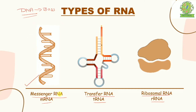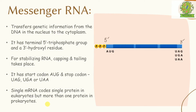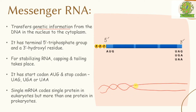Messenger RNA transfers genetic information from the DNA in the nucleus to the cytoplasm. Inside the nucleus, DNA is present. Imagine a DNA strand that has been unwound in a particular area, with the upper strand having a 3' to 5' direction.